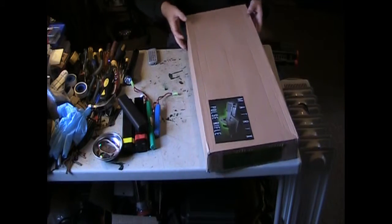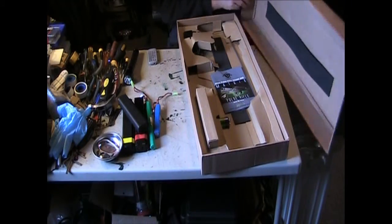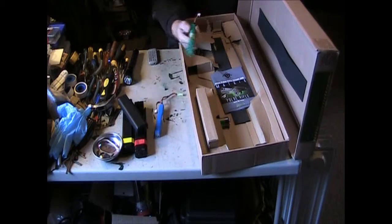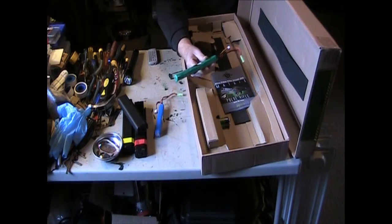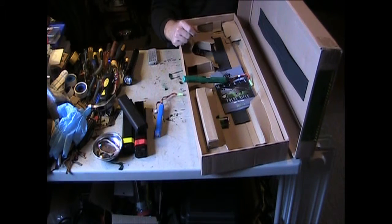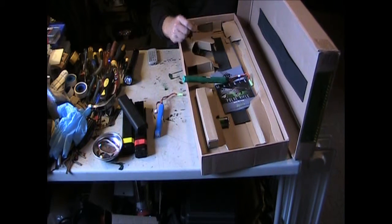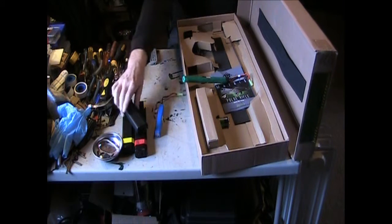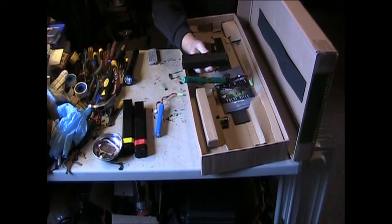In the box, what you get is an 8.4 volt stick battery, the instructions, cleaning rod, battery for the counter, a wall wart charger, and a little mag that fits in there.